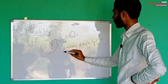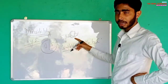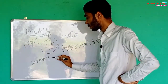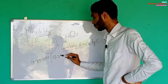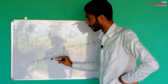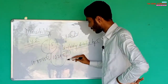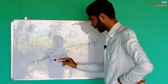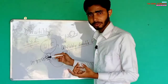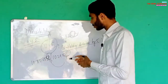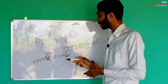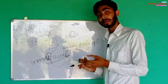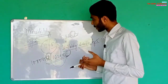So if the ones place of a number is five or zero, then the number is completely divisible by five. For example, a number ending in zero — its ones place is zero — is also divisible by five. Yadi kisi bhi number ki ones place par zero ya five ho, to woh number five se completely divisible hoga.